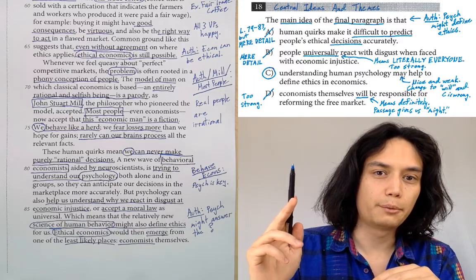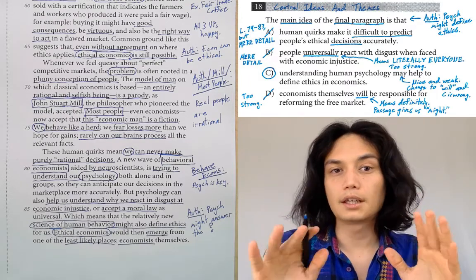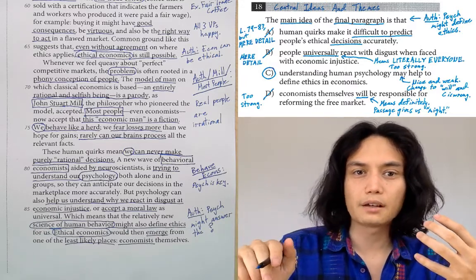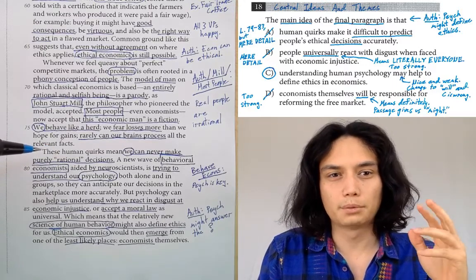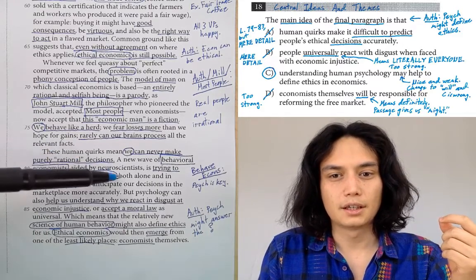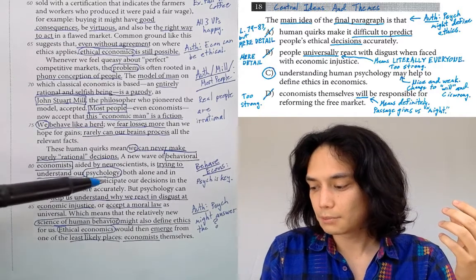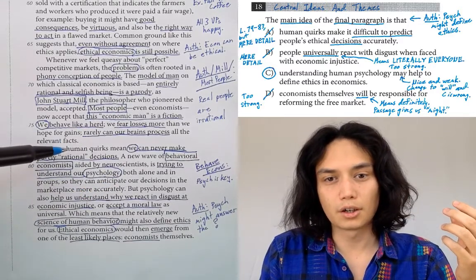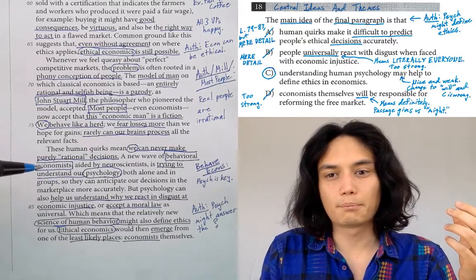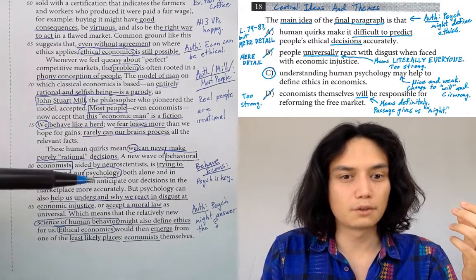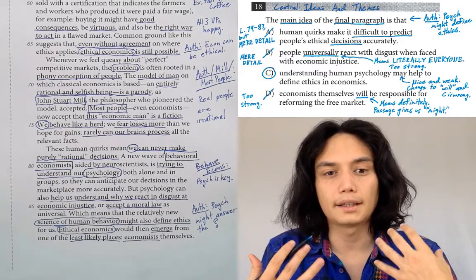Answer choice A: the main idea of the final paragraph is that human quirks make it difficult to predict people's ethical decisions accurately. This is a claim that happens inside this paragraph — it's loaded with buzzwords. The words 'human quirks' are here, they talk about decisions and accuracy, and prediction is a synonym of anticipation — we're trying to anticipate decisions more accurately. These human quirks mean we can never make purely rational decisions. Behavioral economists are trying to understand our psychology so they can predict our behavior more accurately. This claim is in the paragraph. But just because it's in the paragraph doesn't mean it's the main idea — this is a common trope. This is a mere detail.